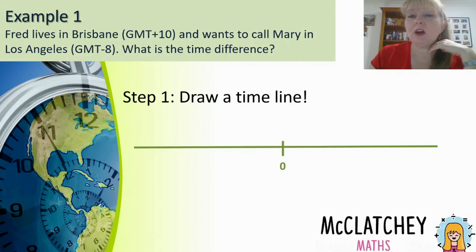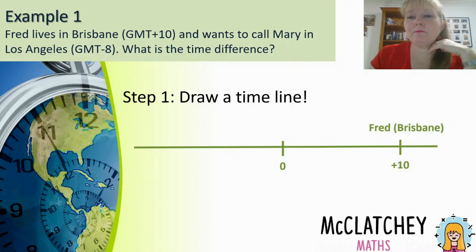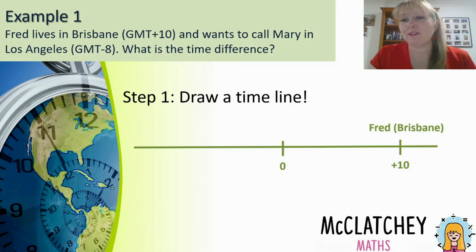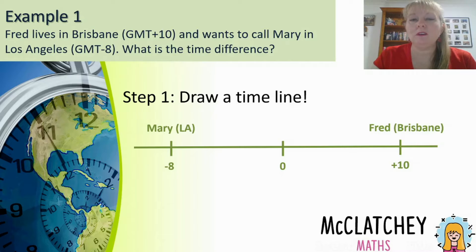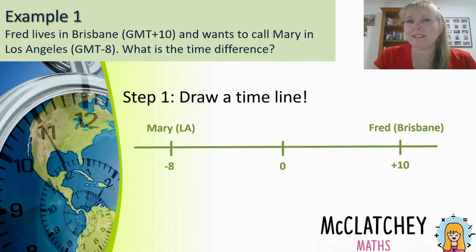When I do this, I draw a straight horizontal line and put a little stroke down the center with a zero representing our Greenwich Mean Time zero. Then I pop on Fred, who's in Brisbane. Thinking of a normal number line, positive numbers are to the right of zero, so that's why his is plus 10. Mary is in Los Angeles and she's going to be minus 8. Now I've got a great visual of how many hours these two cities are apart — I can see it's going to be a time difference of 18.